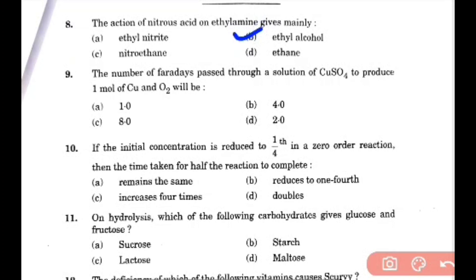The number of Faradays passed through solution of CuSO4 to produce 1 mol of Cu and O2 will be - Cu is 2+, so it gives 2 electrons. But 4 for oxygen. Here we will consider Cu 2+, so it will give 2 mols, 2 number of Farads.